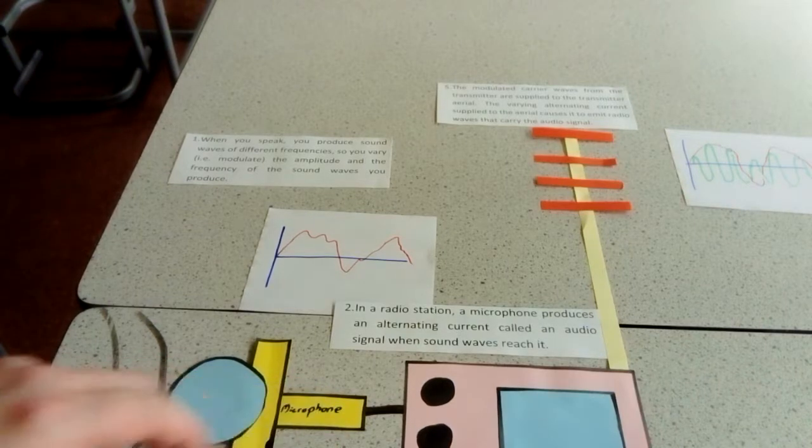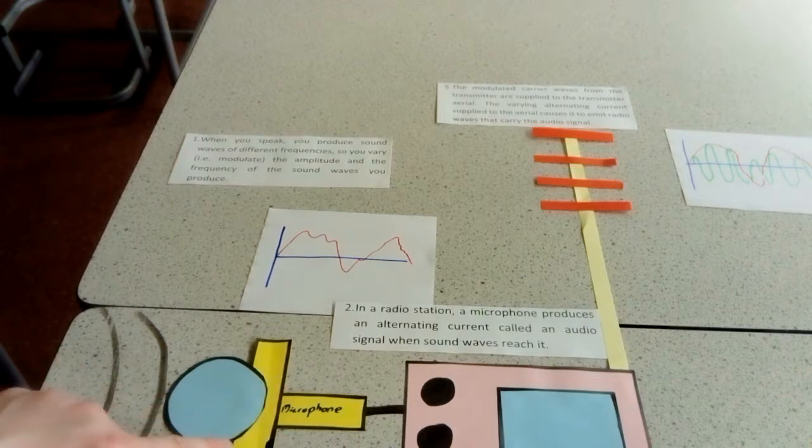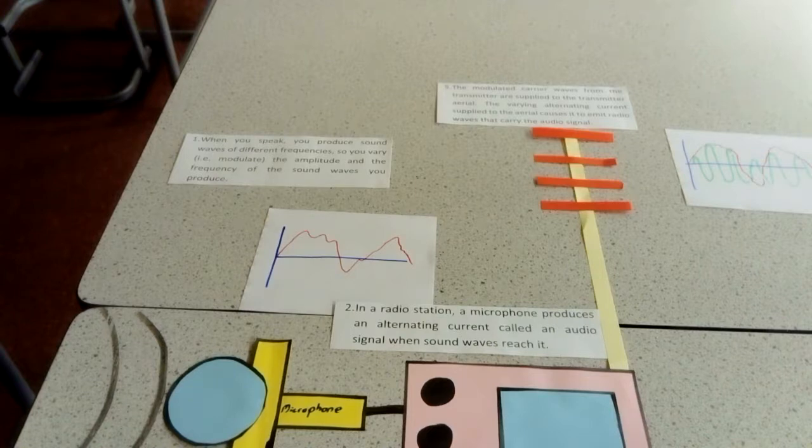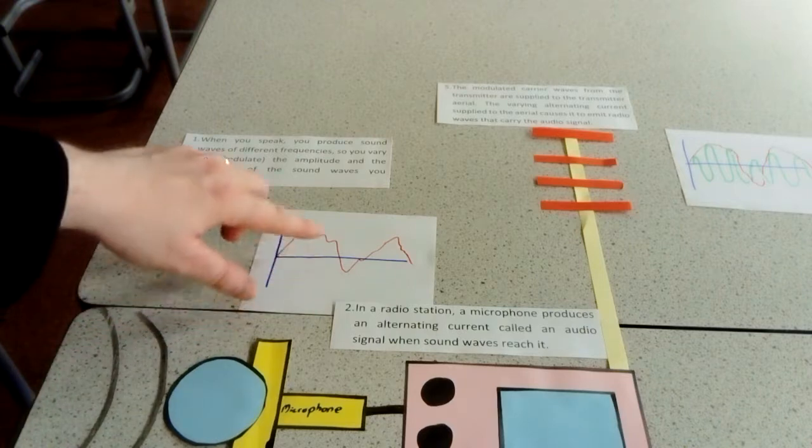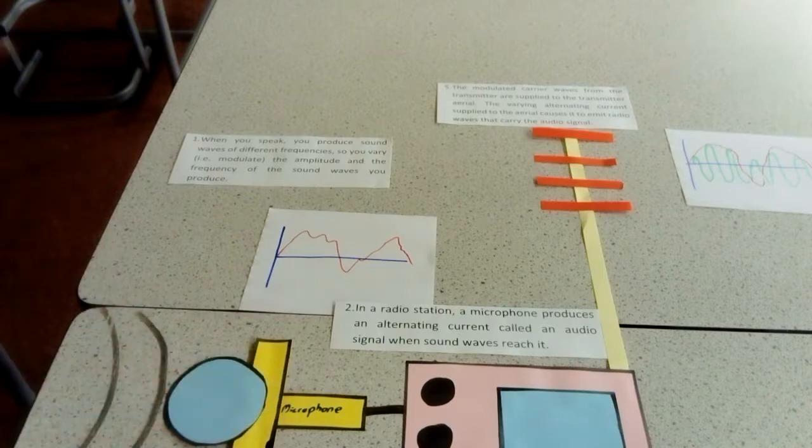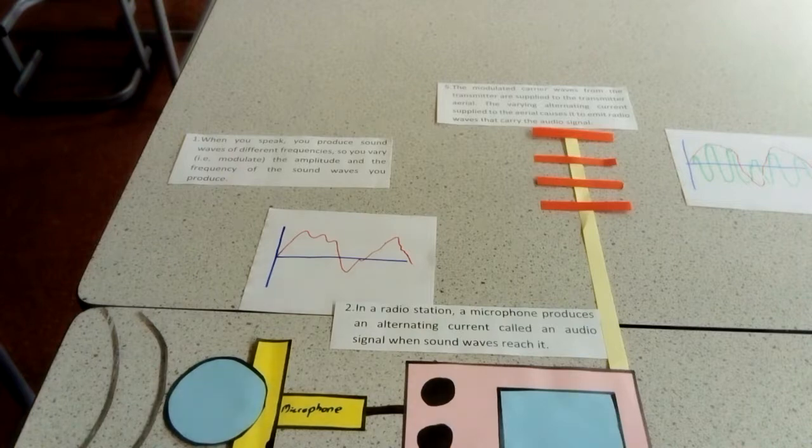It's converted into an audio wave in the microphone. When you speak, you produce sound waves of various frequencies. This varies the modulation of the alternating current that is generated by the microphone, which is then sent down a series of wires to the transmitter. In a radio station, the microphone produces an alternating current which is sent to the transmitter.